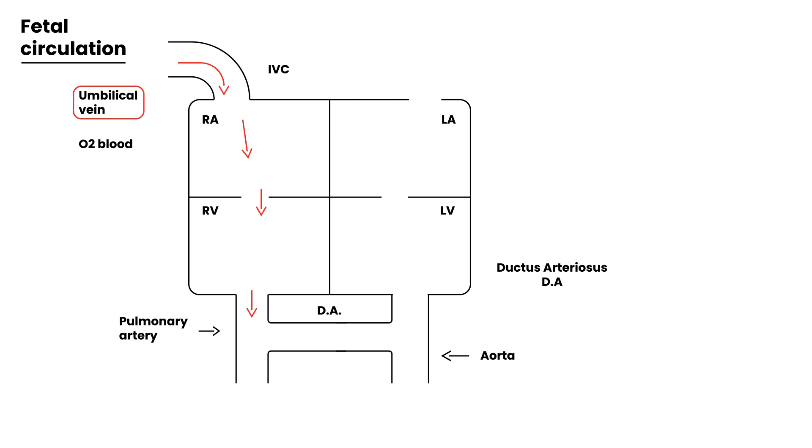What that does is it simply just allows the blood to come to the left side and out through the aorta. Now there's one other hole, and that's up here. This one is called the foramen ovale.